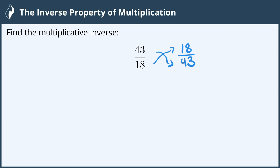And we can check this by multiplying the number 43/18 by the reciprocal 18/43. And if we get the multiplicative identity of 1, then we have a multiplicative inverse.